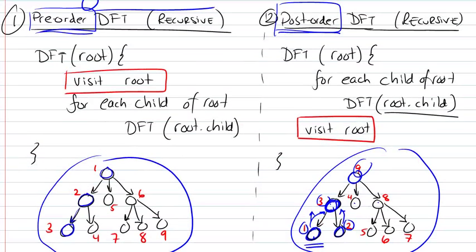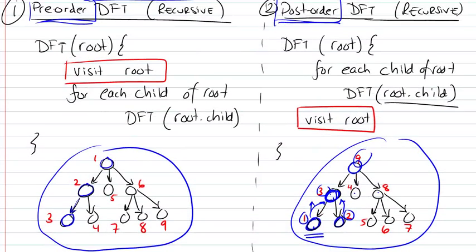So we were looking at the implementations of DFT, and we said that this would be a pre-order traversal of a tree, and this would be a post-order traversal of the same tree.